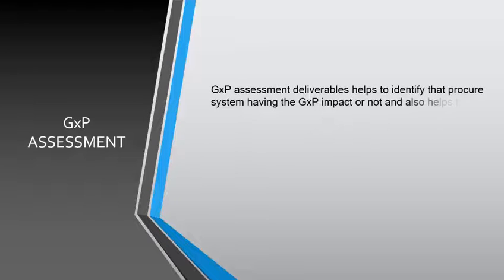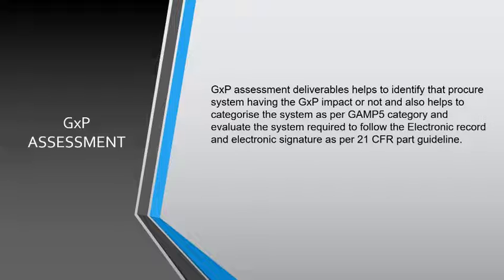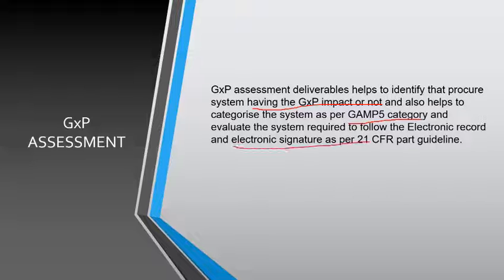Now, what is GXP assessment? GXP assessment deliverables help to identify whether a procured system has GXP impact or not, and also helps to categorize the system as per the GAMP5 category, and evaluate whether the system is required to follow electronic record and electronic signature as per the 21 CFR Part 11 guideline. Based on the GXP deliverables, you can identify three things: first, whether the system has GXP impact; second, the GAMP5 category — category 1, 3, 4, or 5; and third, whether the system follows electronic record or electronic signature requirements.